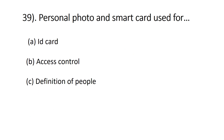Question number thirty-nine: personal photo and smart card are used for — A) ID card, B) access control, C) identification of people. The correct answer is B, access control, because you can use a personal photo and smart card to recognize a person.